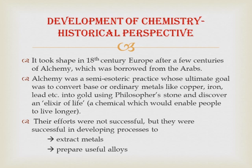The people who practiced alchemy were known as alchemists. Their ultimate goal was to convert base metals — ordinary metals like iron and copper — into gold. They used a particle or stone known as the philosopher's stone to convert copper or iron into gold, which is a precious metal.